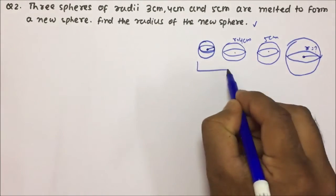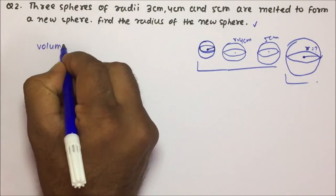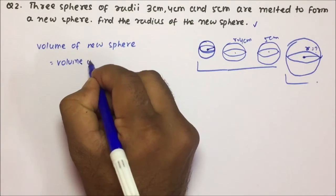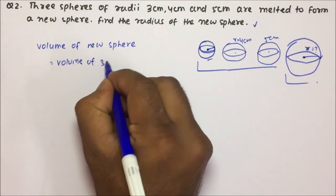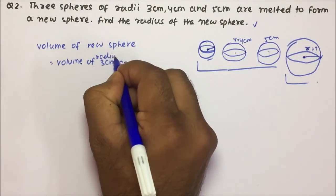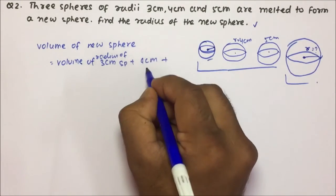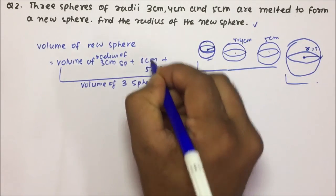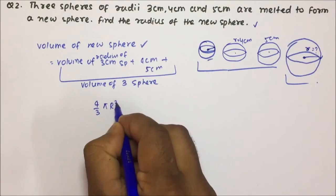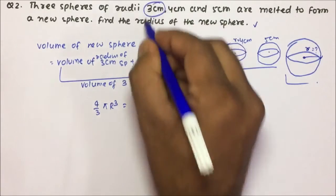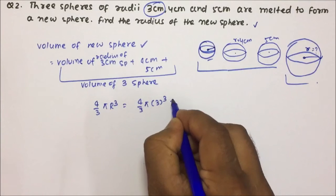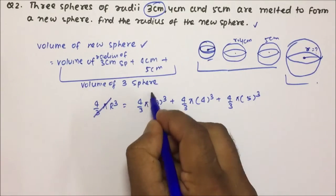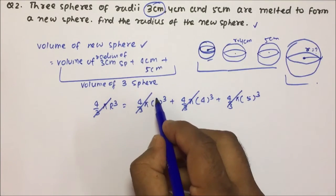Now friends, see — these three spheres you will melt and then you will make a bigger one. That means the volume of the new sphere will be equal to the sum of volumes of the three spheres — the sphere of radius 3 centimeter, plus radius 4 centimeter, plus radius 5 centimeter. So volume of new sphere: 4 by 3 pi r cube equals 4 by 3 pi times 3 cube plus 4 by 3 pi times 4 cube plus 4 by 3 pi times 5 cube. You can see that if you take 4 by 3 pi common, it will get cancelled from both sides.